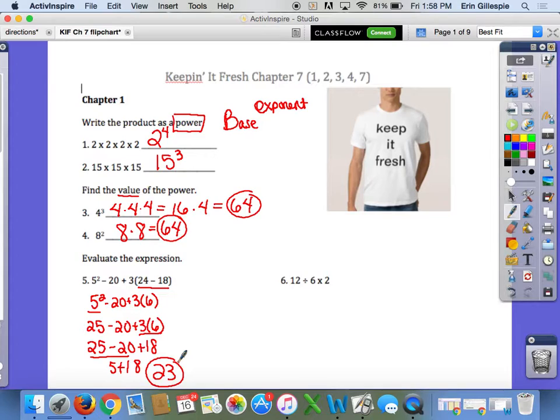Then it's adding and subtracting whatever comes first from left to right. So I'm going to subtract 25 and 20 first. 25 minus 20 is 5, and then 5 plus 18 is 23. Over here, we have 12 divided by 6 times 2. From left to right is really important here. It's whatever comes first between multiplying and dividing from left to right. So we divide 12 divided by 6 first, and then do 2 times 2 to get 4.